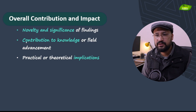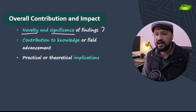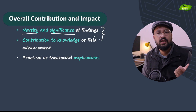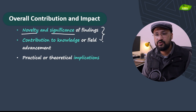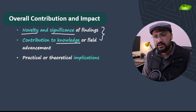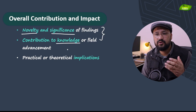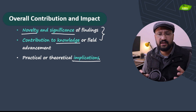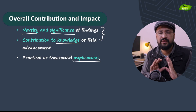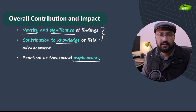Now let's talk about the overall contribution and impact. Novelty and significance should be there. Whenever any article is getting published, it should be new — it should be novel. You need to look for that by searching for similar studies or similar patents. If there is nothing like that, it means it's novel and it's answering a specific, very important question. You also need to see that it contributes to the knowledge and enhances the knowledge in that particular field. It should also have implications — whether practical or theoretical — and you should be able to see overall contribution and impact of that particular research article in the area.